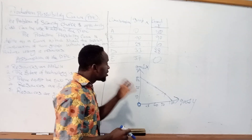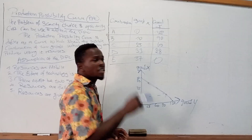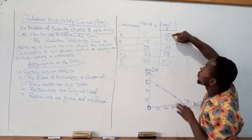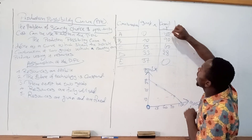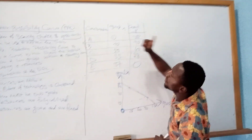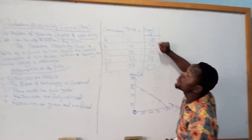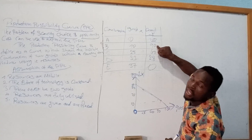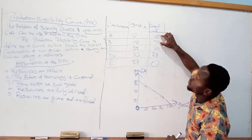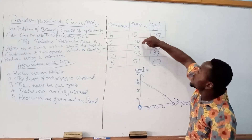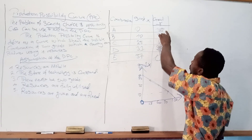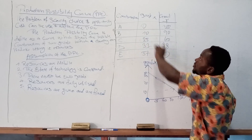How can opportunity cost be illustrated in this diagram? At first the country was producing 100 units of good Y and nothing for good X. But then the country decided to forgo 10 units of good Y — going from 100 to 90 — in order to produce 10 units of good X. So the country forewent 10 units of good Y to produce 10 units of good X.